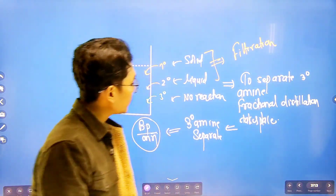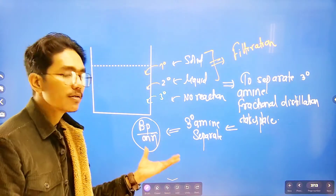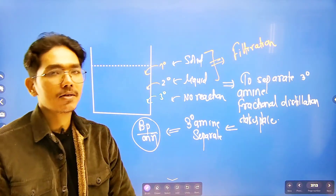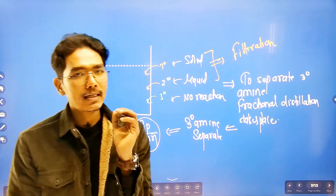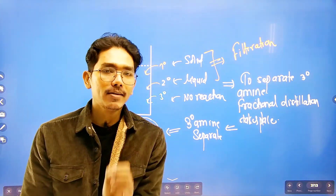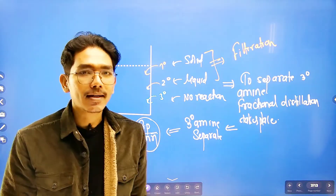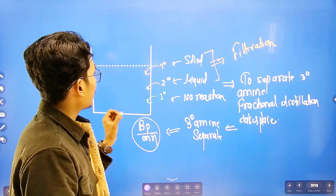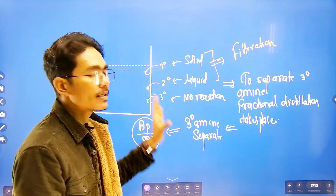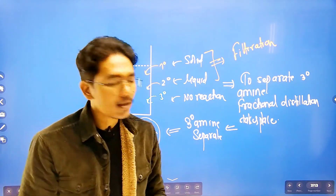From the reaction mixture, by filtration we can separate the solid from the liquid — solid oxalamide from liquid oxamide.